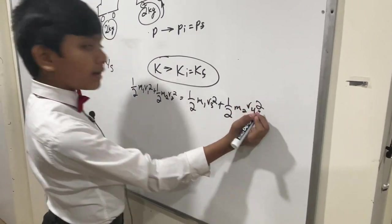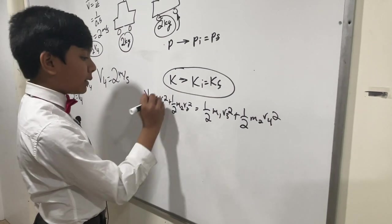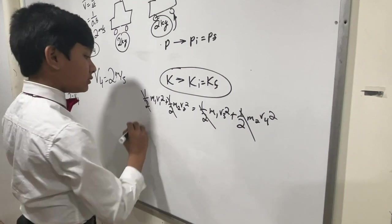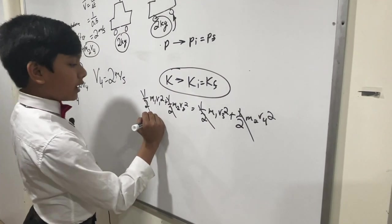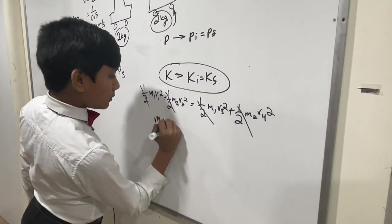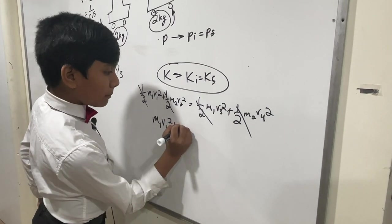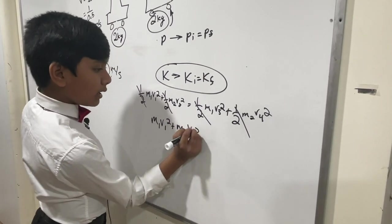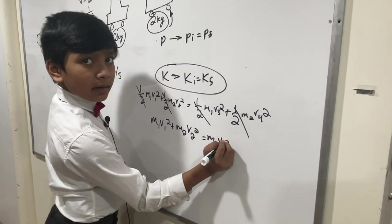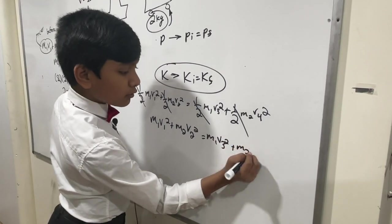And obviously, for a sight, we can multiply both sides by 2. Cancel out all these little jeezers. We've got M1 V1 squared plus M2 V2 squared is equal to M1 V3 squared plus M2 V4 squared.